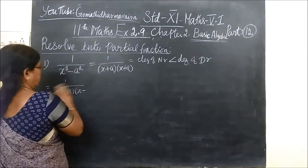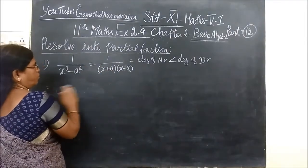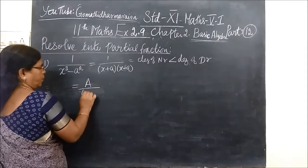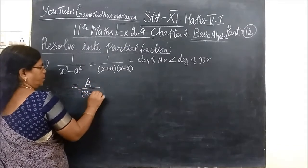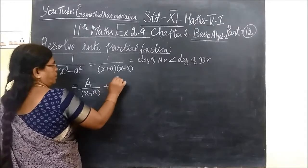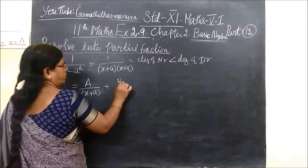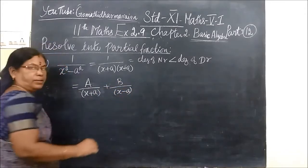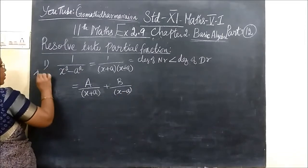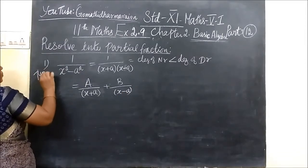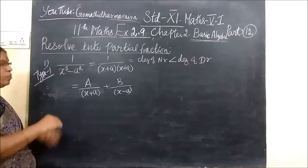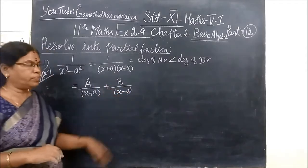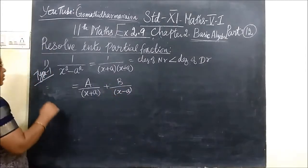Then, you see how you split it? One constant by S plus A, plus another constant by S minus A. This is type 1. So type 1: we split it as one constant by S plus A plus another constant by S minus A.